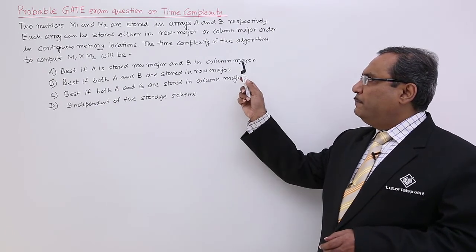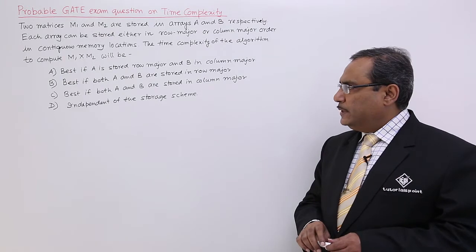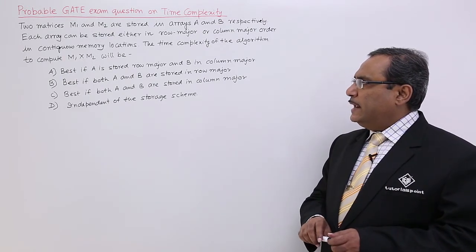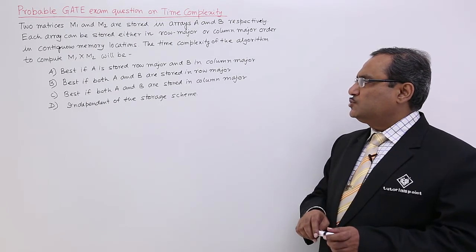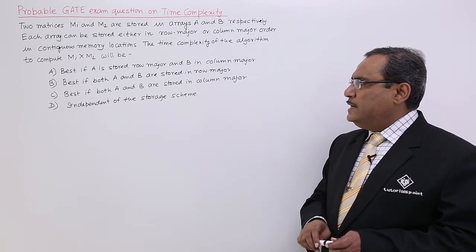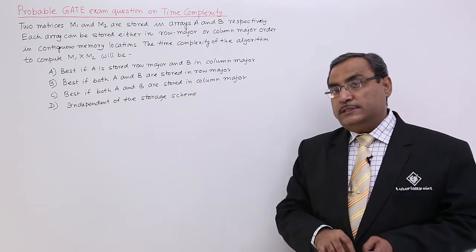Best if A is stored in the row major and B in the column major. Best if both A and B are stored in the row major. Best if both A and B are stored in the column major, independent of the storage scheme.